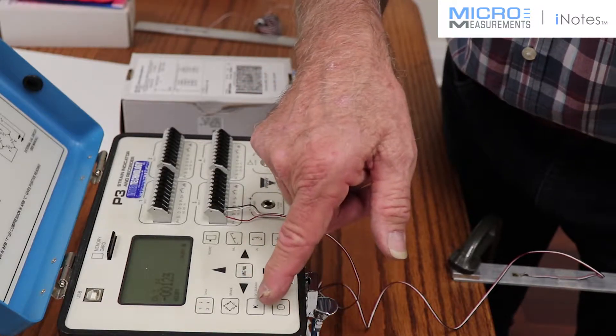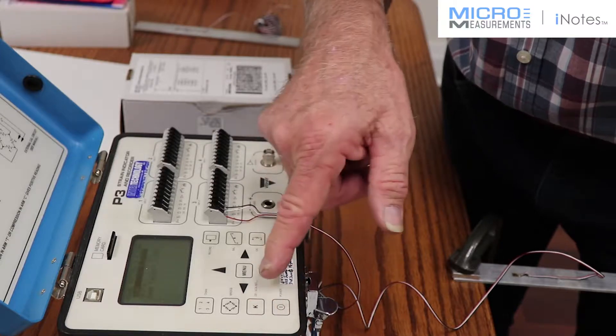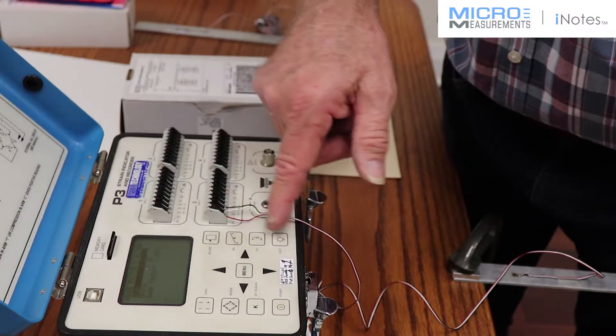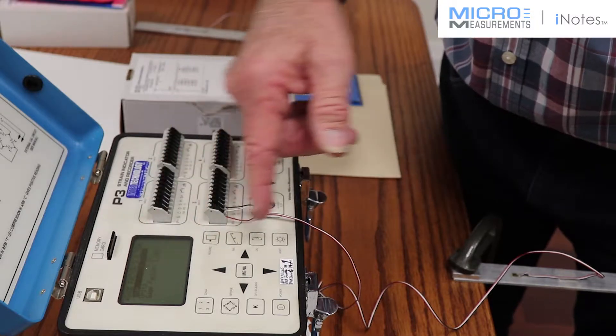What I do is I set up the gauge factor, the channel scaling on channel three, the micro strain readout, and the gauge factor, which is normally two.